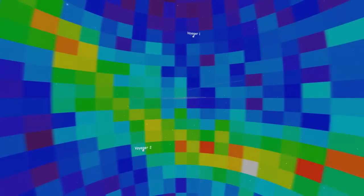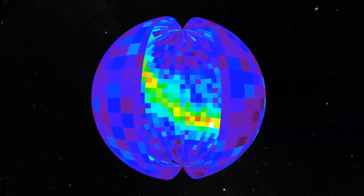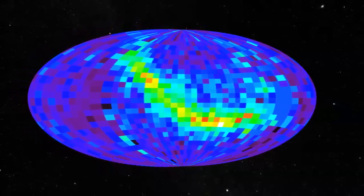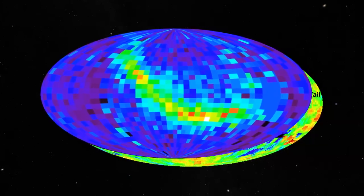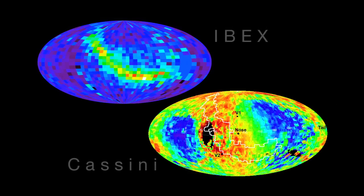Even as the Voyagers answer questions about our solar system, they raise others. For example, scientists aren't clear yet how the bubbly heliosheath is linked to the ribbon feature discovered by Ibex and Cassini. This ribbon shows the emission of energetic particles and seems to indicate some interaction with interstellar space.